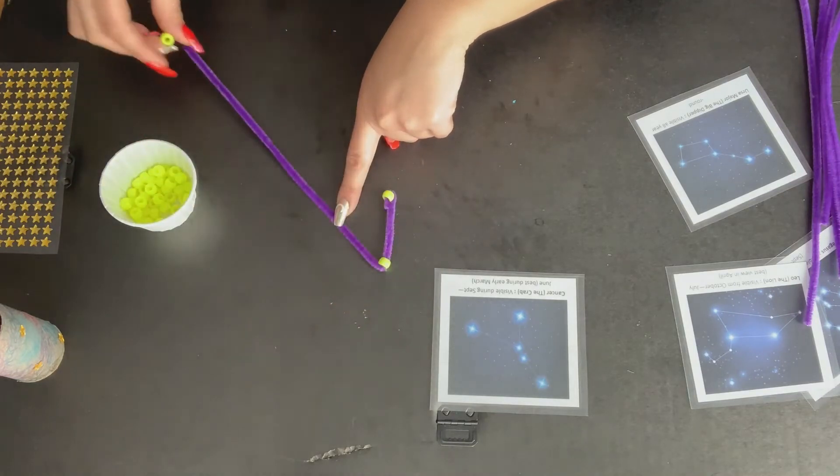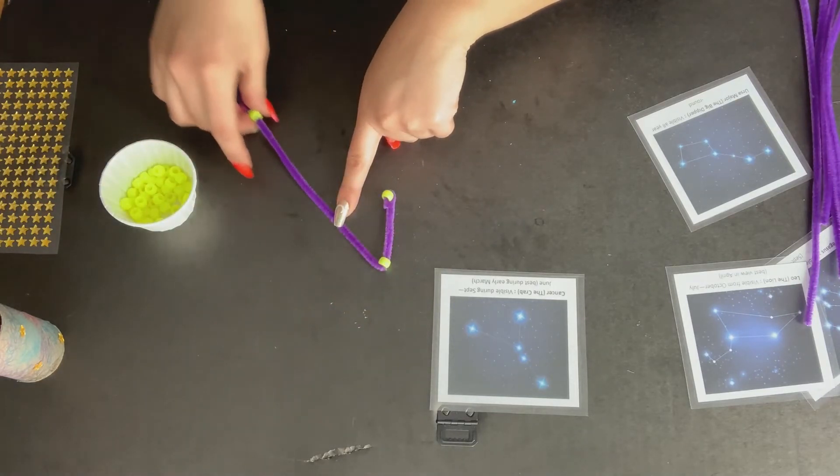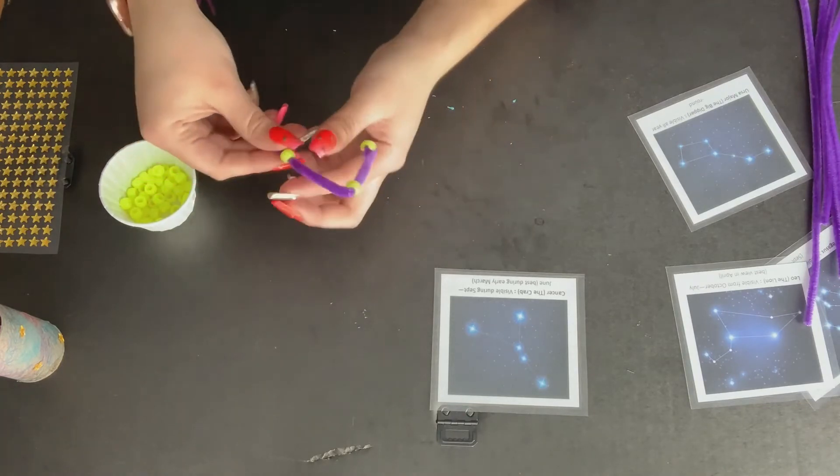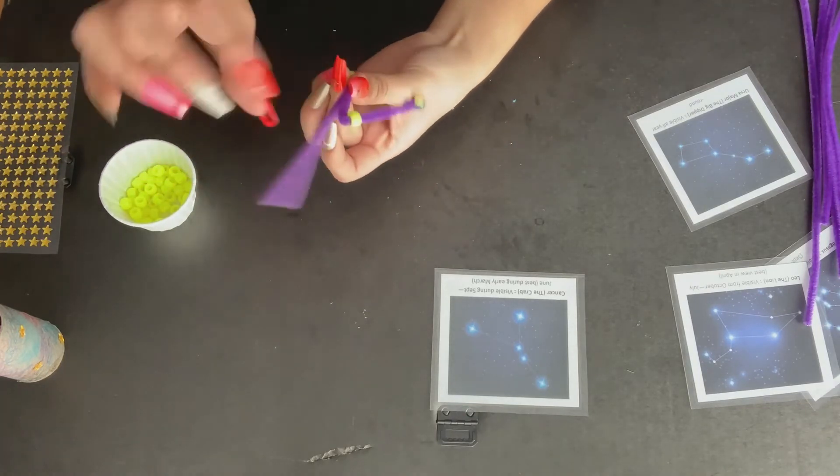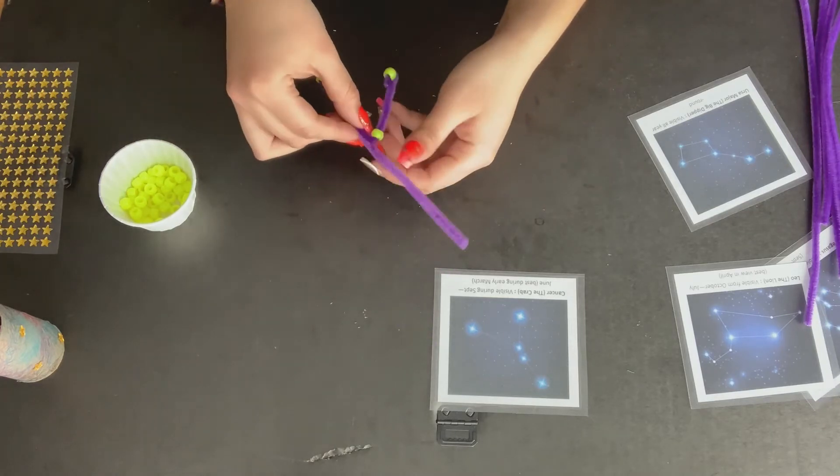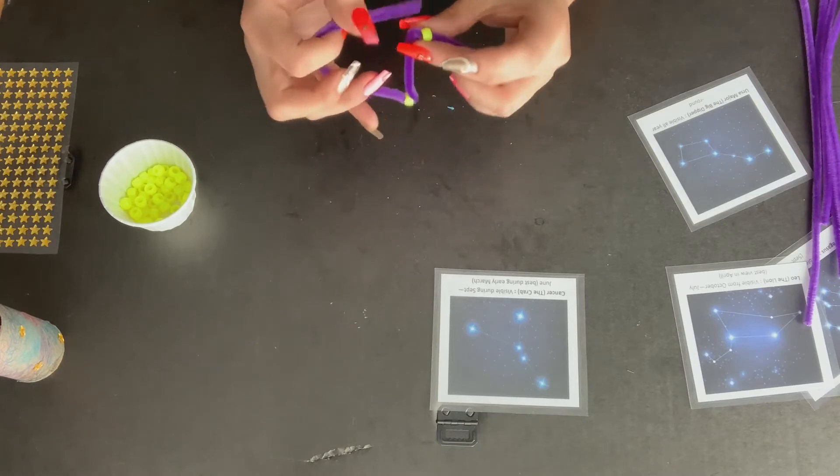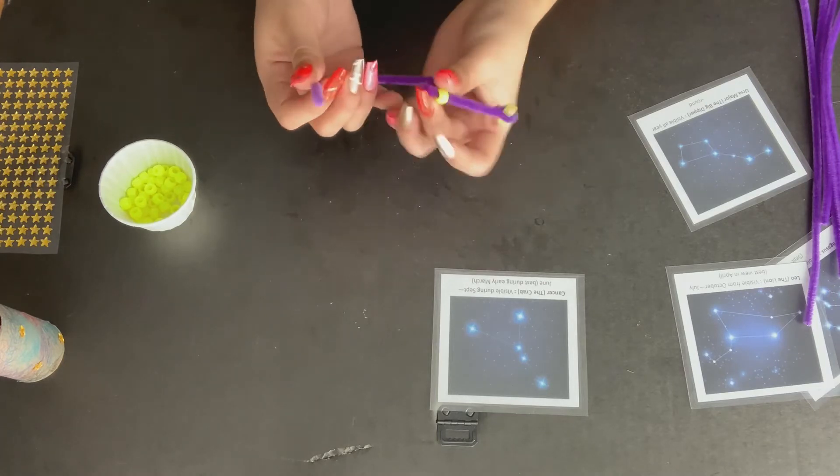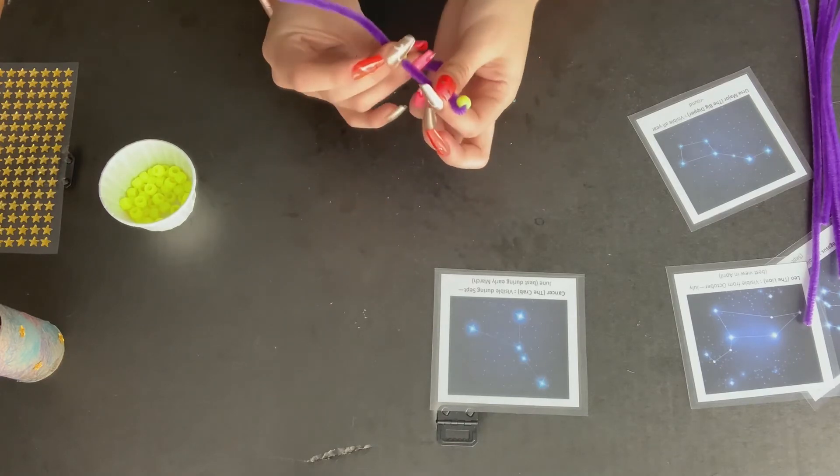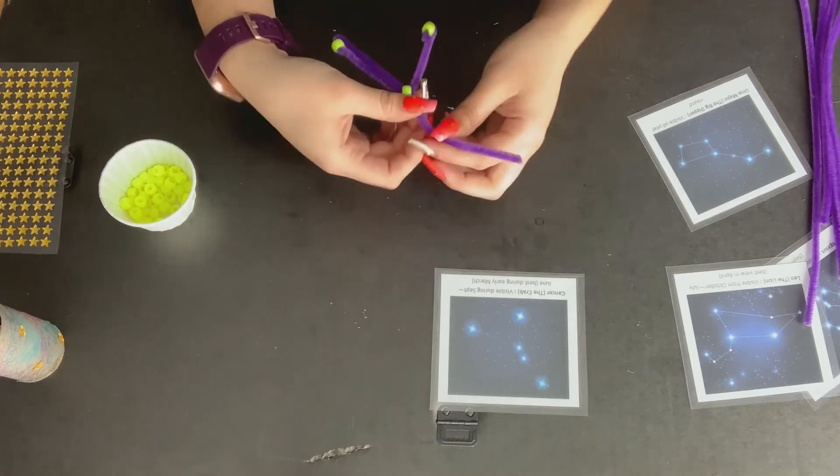So for this part, I'm going to slide my bead on just enough to where I want it to go. Then I'm going to bend my pipe cleaner. And pipe cleaners are easily bendable, so you can weave it through beads to help it secure together better. And you can twist and mold the pipe cleaner to the shape you need it.